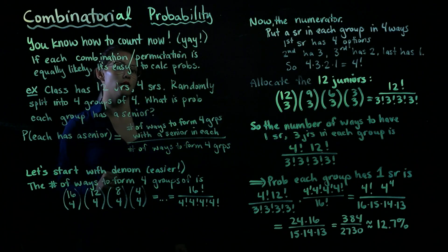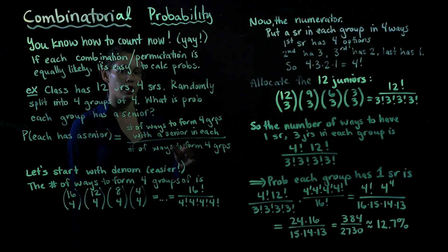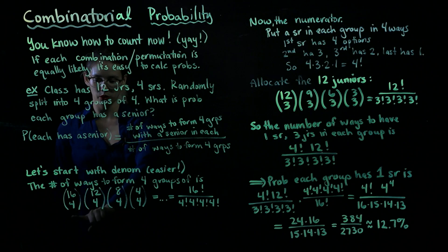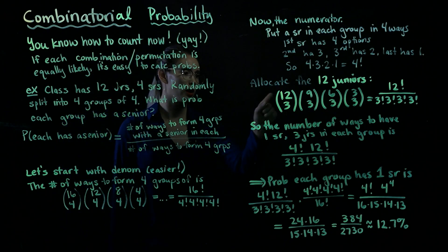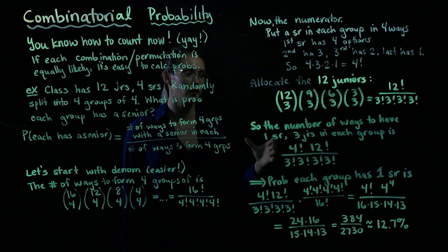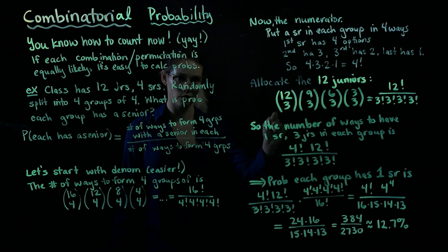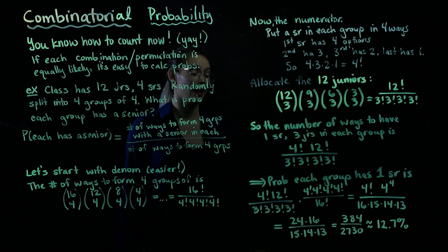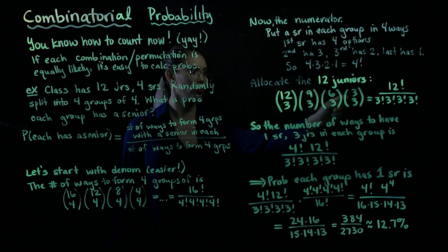Now we have allocated the four seniors, so it's time to allocate the twelve juniors. With twelve juniors being put into four groups, there are three juniors in each group. For the first group, we have twelve juniors and we're choosing three of them. For the next group, nine remain, so we choose three. For the next group, six remain and we choose three. For the last group, three juniors remain and we choose three of them — that's 3 choose 3.